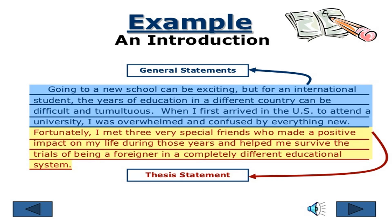Let's take an example. The essay topic is 'going to a new school.' Introduction: 'Going to a new school can be exciting, but for international students, the years of education in a different country can be difficult and tumultuous. When I first arrived in the US to attend a university, I was overwhelmed and confused by everything new.' Then the thesis statement: 'Fortunately, I met three very special friends who made a positive impact on my life during those years and helped me survive the trials of being a foreigner in a completely different educational system.' This whole essay is about three friends who changed the writer's life.